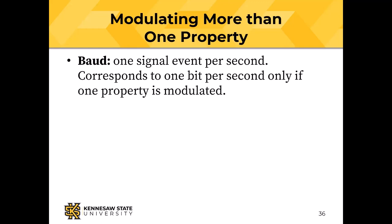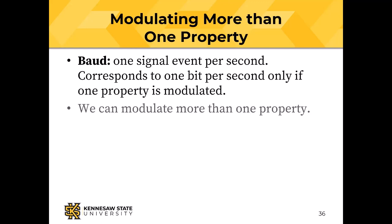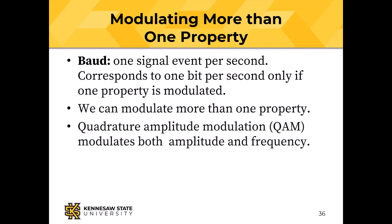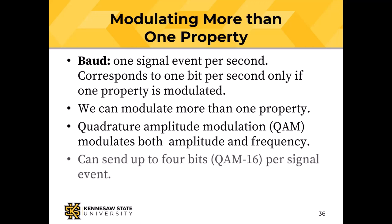You can modulate more than one property and jam more than one bit into one signal event. Baud is one signal event per second. If modulating only one property, baud equals bit rate. But with quadrature amplitude modulation (QAM), which combines amplitude and frequency modulation, QAM16 can send four bits with one signal event.